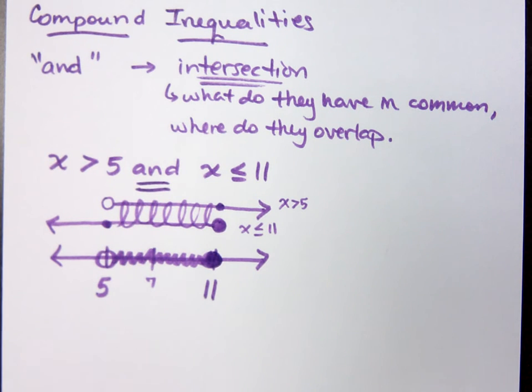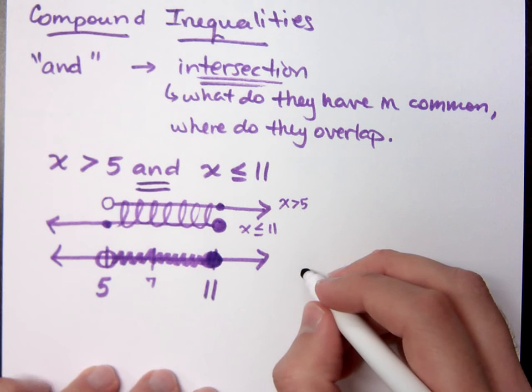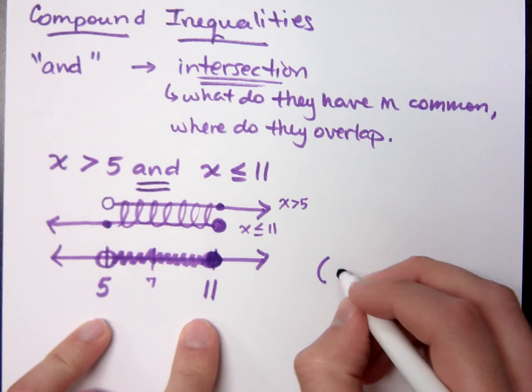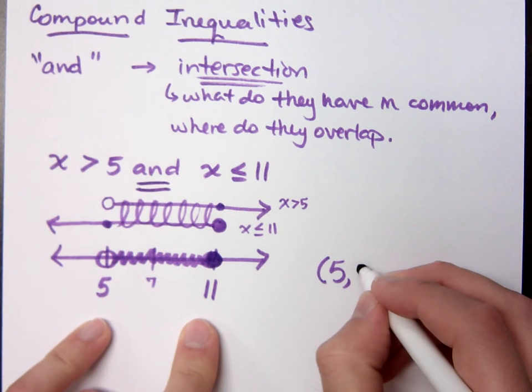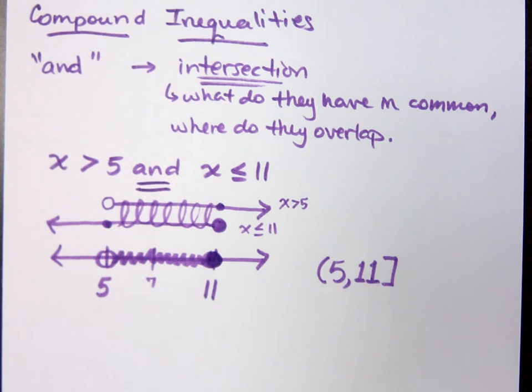And then what does that look like for my interval notation? It's going to be from 5 to 11, parentheses on the 5, bracket on the 11, right?